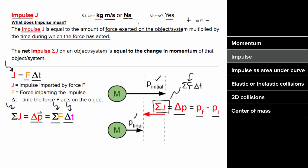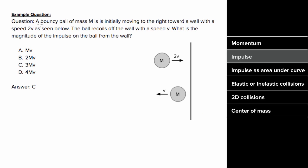So what's an example problem involving impulse look like? Let's say a bouncy ball of mass M is initially moving to the right with a speed 2v, and it recoils off a wall with a speed v. And we want to know what's the magnitude of the impulse on the ball from the wall.